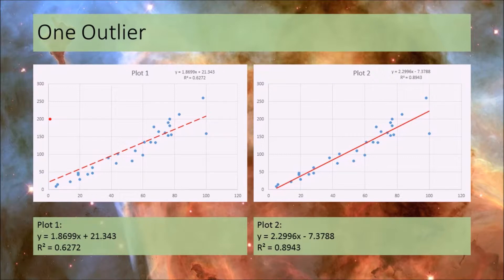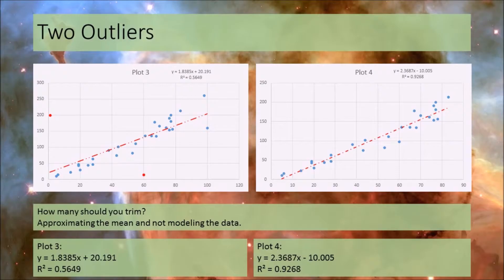Also look at the intercepts — they change signs. In plot one the intercept is positive 21; in plot two it's negative seven. Having a positive or negative value can mean something different and give significantly different conclusions. The intercept changes from 20 in plot three to negative 10 in plot four. Next we're going to look at the multivariate case, which is easier to view by plotting the X and Y axes and looking at the trimming impact.